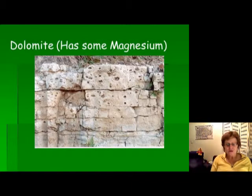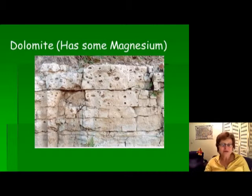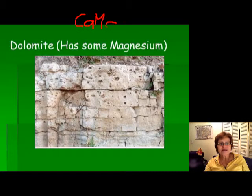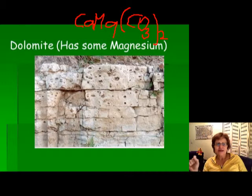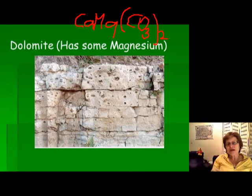Now this is the dolomite — the second group of carbonates. Remember we started with limestone, and now this is the dolomite. The difference between limestone and dolomite is that dolomite has some magnesium in it. The formula is calcium magnesium CO3, sometimes called dolostone — they are synonyms. You don't have to memorize the formula; just know that dolomite has magnesium in it. Dolomite always forms from pre-existing limestone — the first thing that settles down is lime mud.